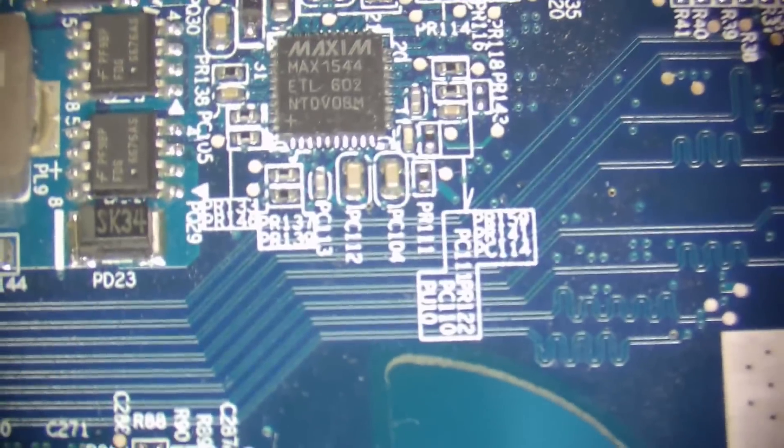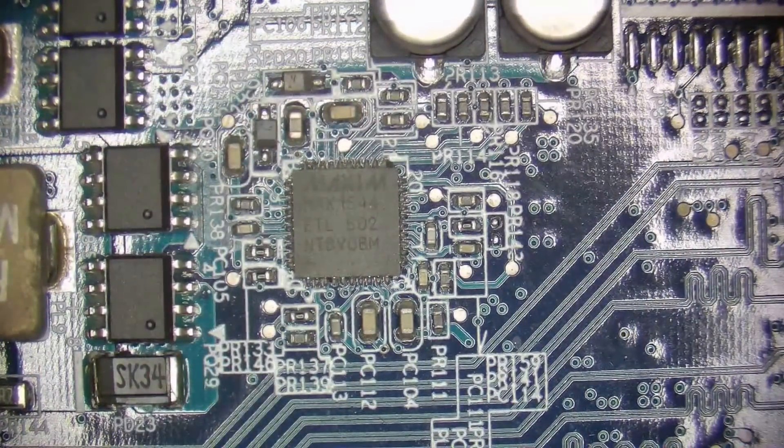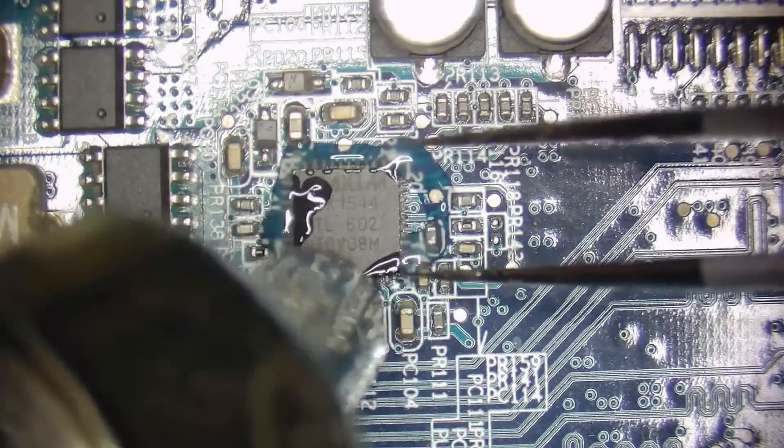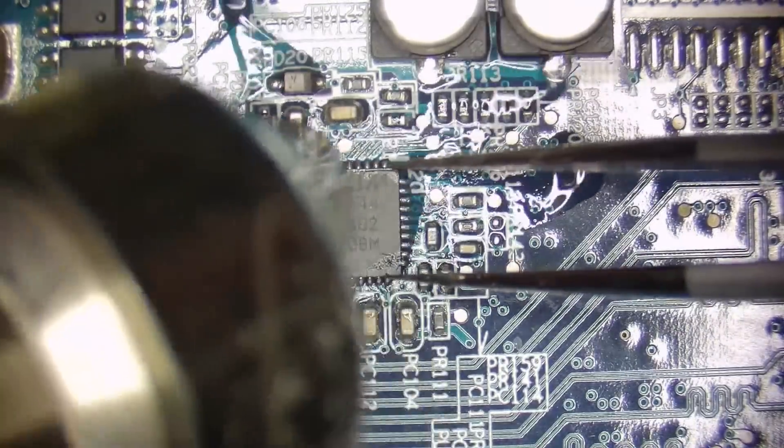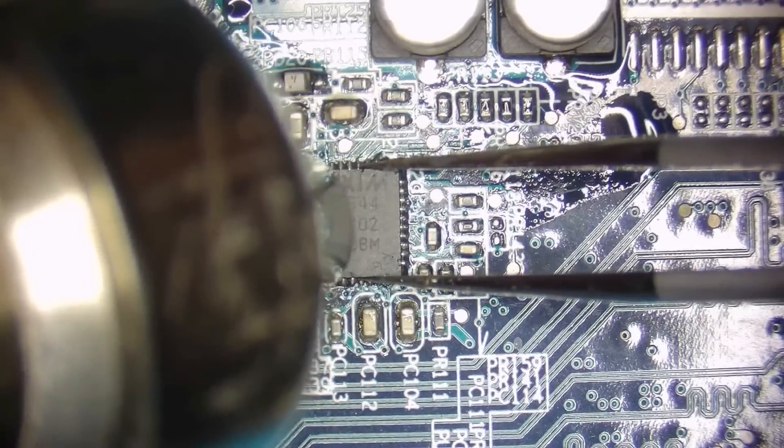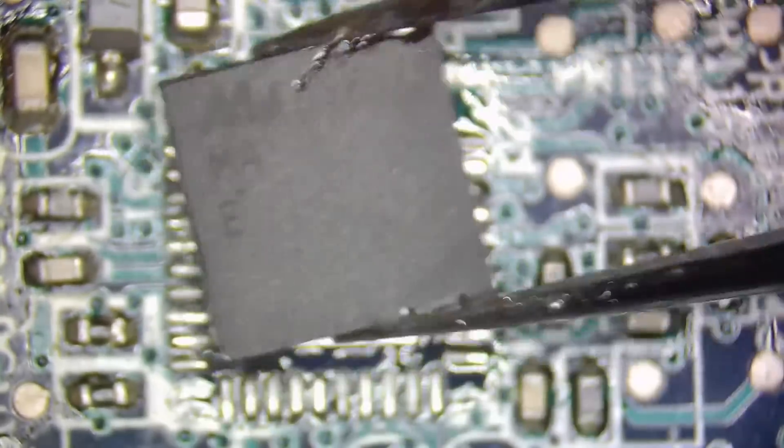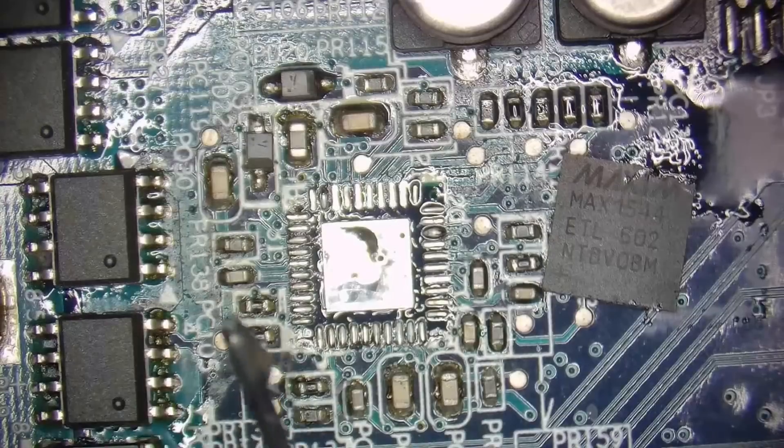Next, we're going to take a look at how to rework a QFN package. The first thing again will be to apply some flux and remove the chip from the PCB using hot air set to 380 degrees C. As you can see, this chip has no leads sticking out of it.